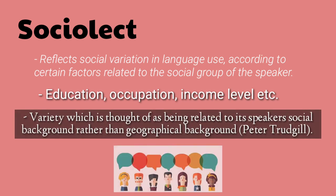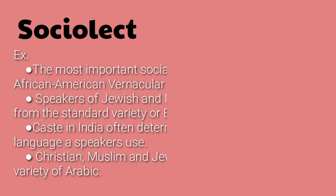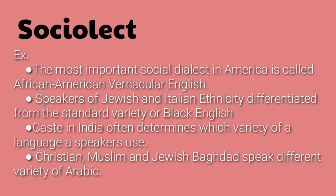According to Peter Trudgill, Social Act is a variety which is thought of as being related to its speaker's social background rather than geographical background. For examples: the most important social dialect in America is called African American Vernacular English. Speakers of Jewish and Italian ethnicity are differentiated from the standard variety, or Black English. Caste in India often determines which variety of language a speaker uses — Christian, Muslim, and Jewish speakers speak different varieties of Arabic.